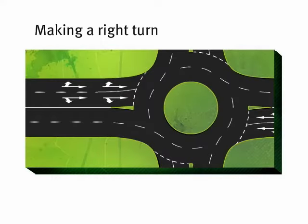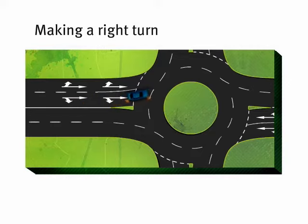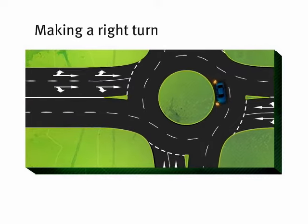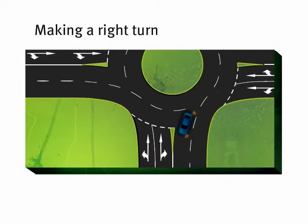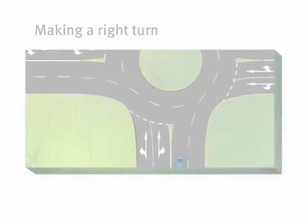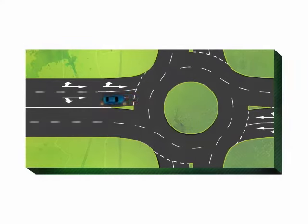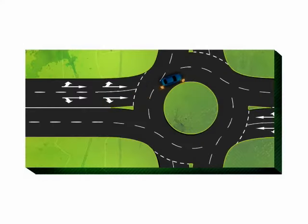To make a right turn, approach the roundabout in the right lane or line of traffic. Then signal right as you approach the roundabout, and continue to signal right until you're ready to exit. Then signal left before you exit the roundabout. The same rule applies if you intend driving beyond the right turn exit.